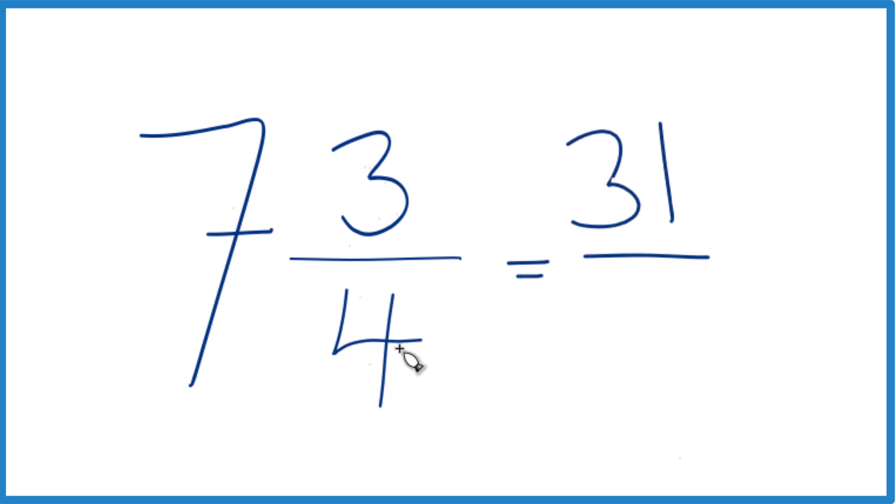And then we just bring the 4 across here, and we end up with the improper fraction 31 fourths. And that's equivalent, that's equal to 7 and 3 fourths. They have the same value, just represented differently here as an improper fraction.